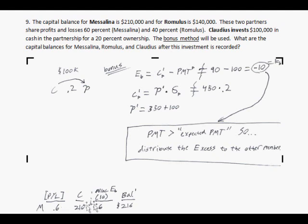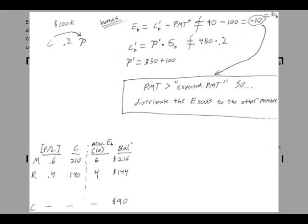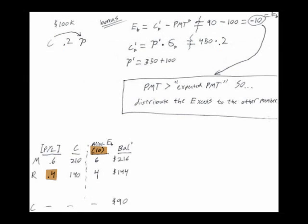So, 10 times their share is 6. So, add that, and that's M's balance. And do the same thing. 10 times 0.4 equals 4. Add that to R's original capital balance, and then you have $144,000. There you go.